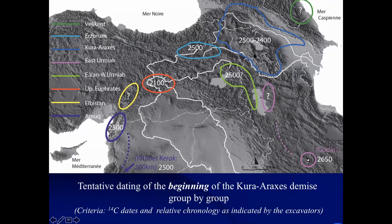In the Kangava region, at the site of Godin Tepe — even if the data is a bit questionable — it seems that the demise of the Kura-Araxes occupation there started earlier, around 2650. At Kilbet-Kirag it's only 2500, but in the upper Euphrates it happened much later, at the very end of the third millennium.